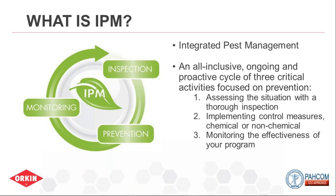So what is IPM — Integrated Pest Management? It's an all-inclusive, ongoing, proactive cycle of three critical activities focused on pest prevention. First, you assess the situation through a thorough inspection, starting with identifying what type of pest you're dealing with. If someone thinks they saw a bed bug but it's actually a plant-feeding bug that flew in through an open door, collecting and identifying it is the critical first step in IPM.